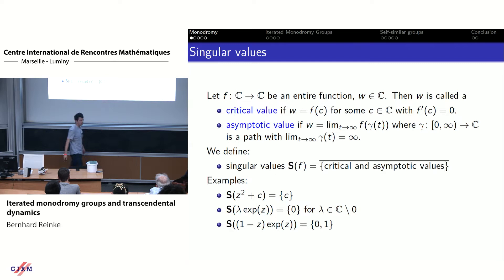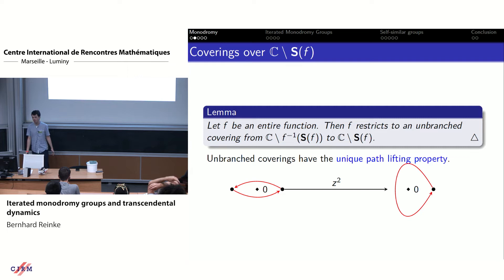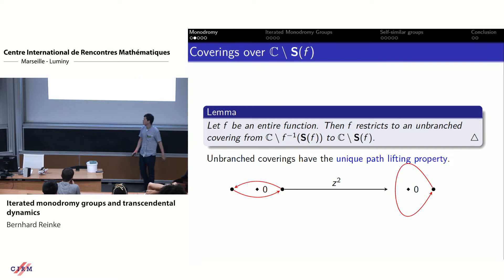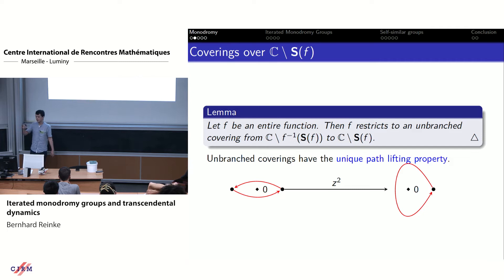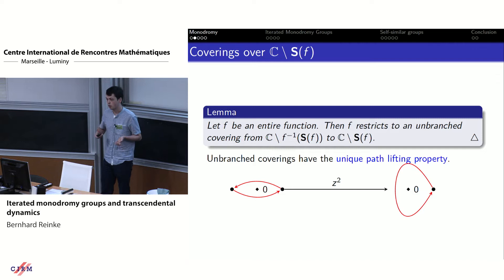Why are we interested in singular values? If we have an entire function, it restricts to an unbranched covering away from the singular set. An unbranched covering has unique path-lifting properties. So if we have some path going around 0, we can lift it, but loops might not need to close up. If you go once around 0, we only do a half turn if you take three images. This is where the interesting properties of monodromy come into play.